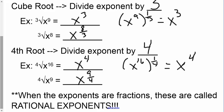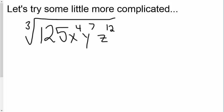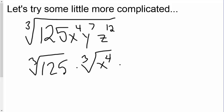Let's try some little more complicated. All right, so don't freak out. We're going to be okay. We're going to break this down into bit by bit, which means that we're going to take the cube root. I'm essentially going to break this down to the cube root of 125, times the cube root of x to the 4th, times the cube root of y to the 7th, times the cube root of z to the 12th. And I really do not expect you to write it out like that every time. That would be ridiculous. But by doing this, we can break it down and figure out it by part by part.